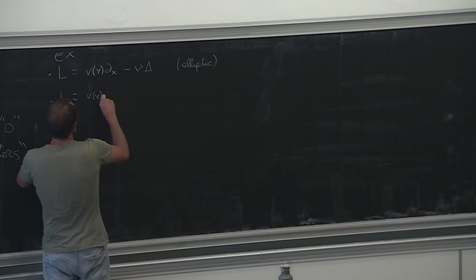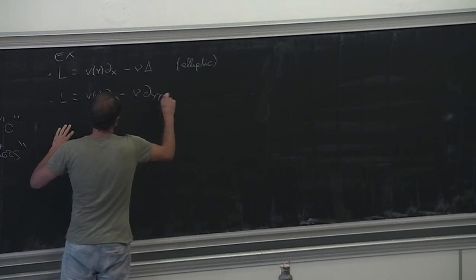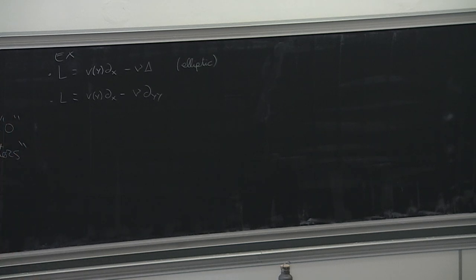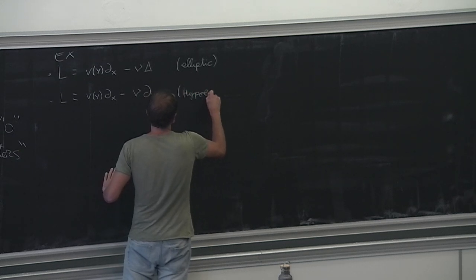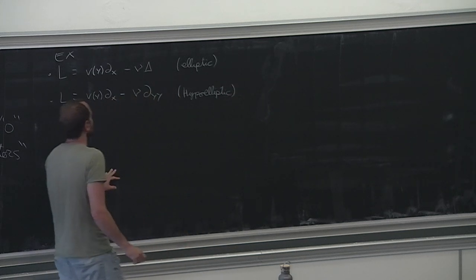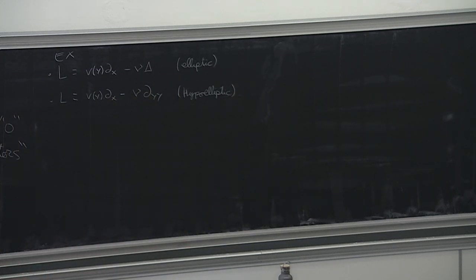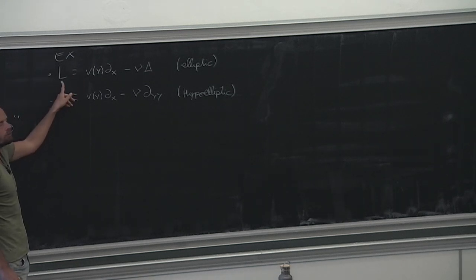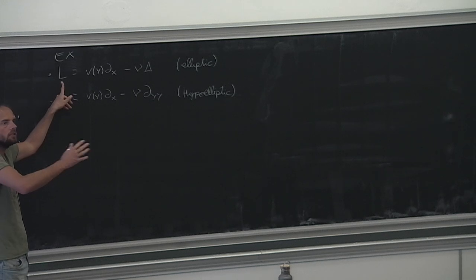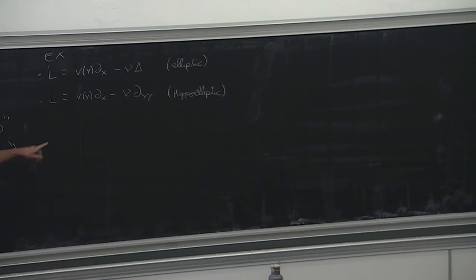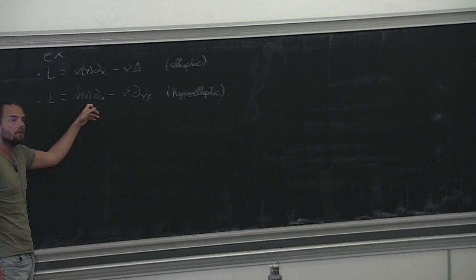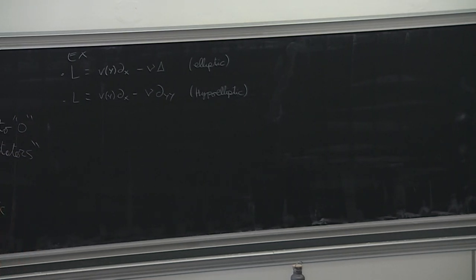There is a hypoelliptic version: just take diffusion in only one direction, ∂yy. This is hypoelliptic. Because if you just prove convergence to zero for an equation with just ∂yy, you do the L2 estimate and it converges to zero — that's just the simple heat equation estimate. But with hypoelliptic diffusion, you won't be able to do that as easily. That's hypocoercivity coming from a coercive versus non-coercive situation.